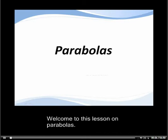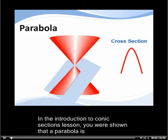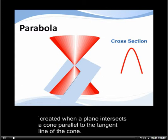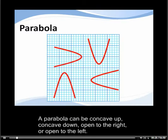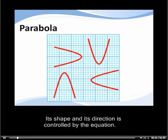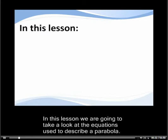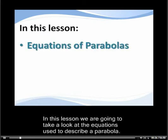Welcome to this lesson on parabolas. In the introduction to conic sections lesson you were shown that a parabola is created when a line intersects a cone parallel to the tangent line of the cone. A parabola can be concave up, concave down, open to the right, or open to the left. Its shape and direction is controlled by the equation.